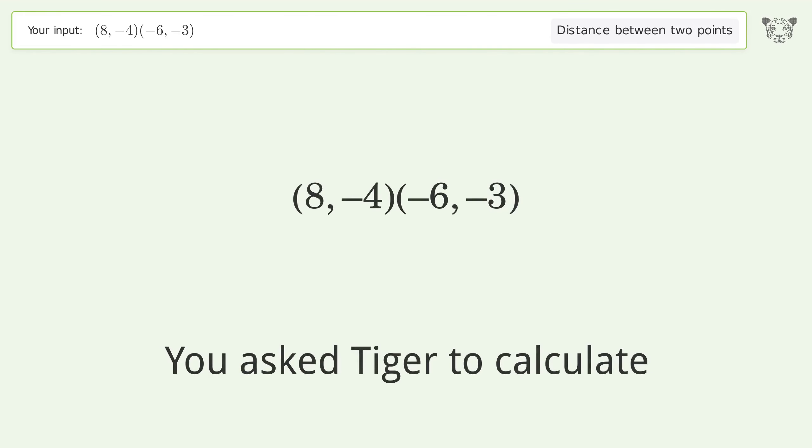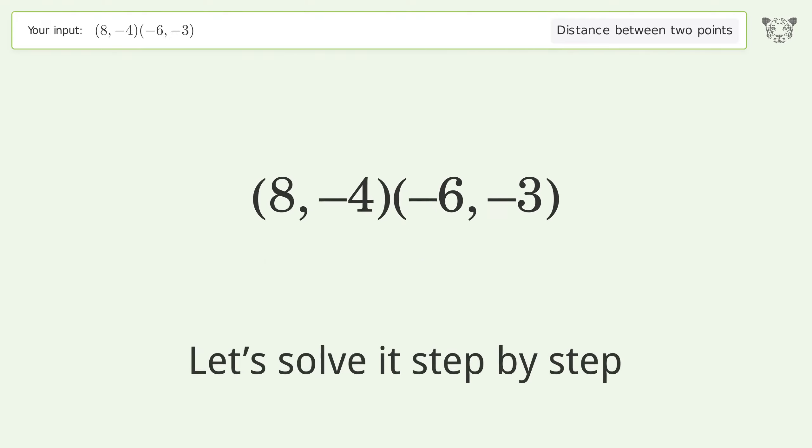You asked Tiger to calculate the distance between two points. The distance between the two points is the square root of 197 or 14.036. Let's solve it step by step.